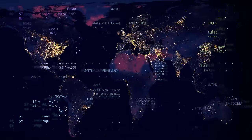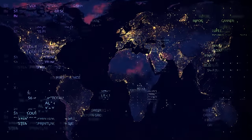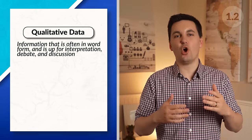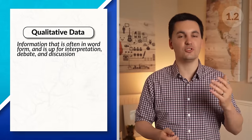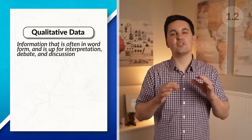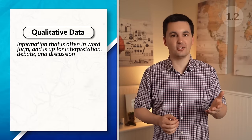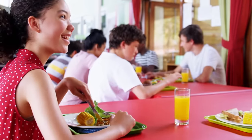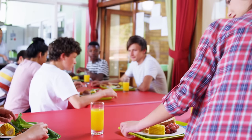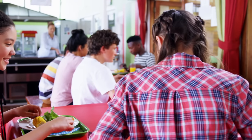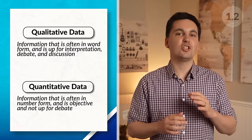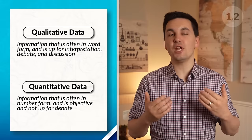When we look at data, there are two main categories: qualitative data and quantitative data. Qualitative data is information that is often in word form and is up for interpretation, debate, and discussion. This data is subjective and will differ depending on who is collecting it and how it is being collected — often gathered through observations and interviews. Quantitative data, on the other hand, is often in number form and is not up for debate. This information is concrete and objective.